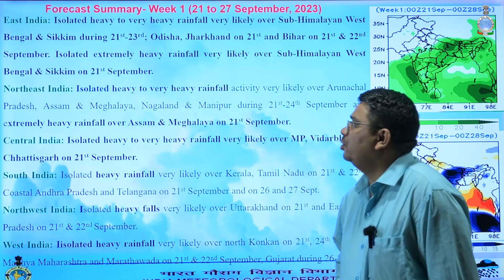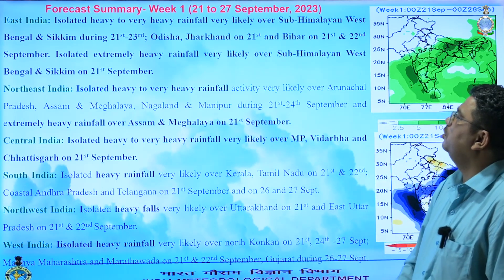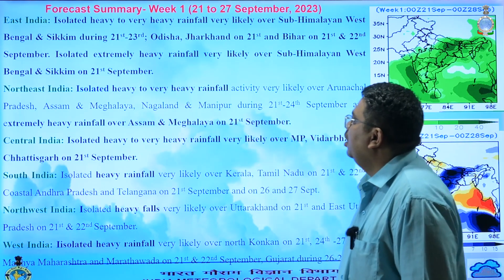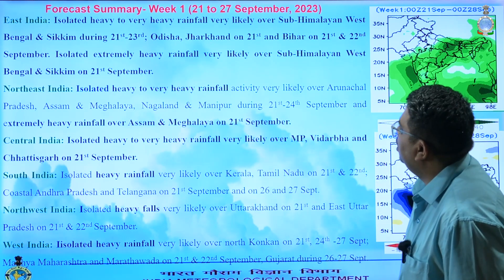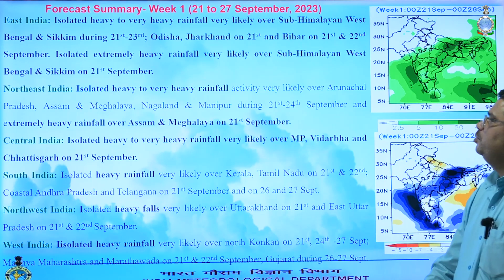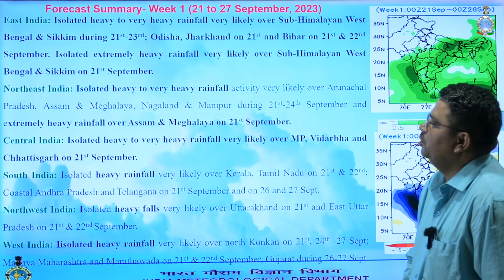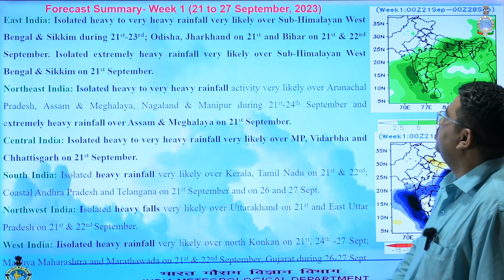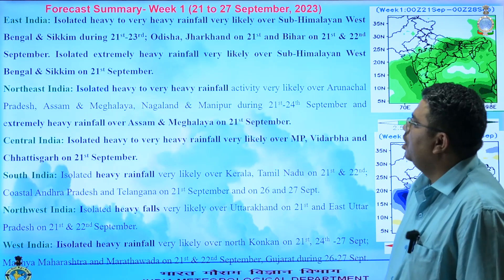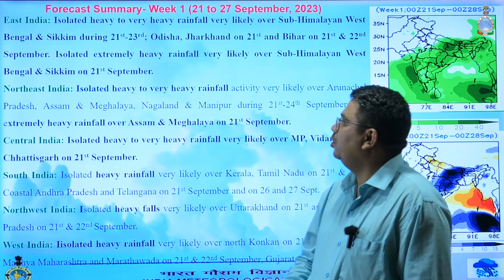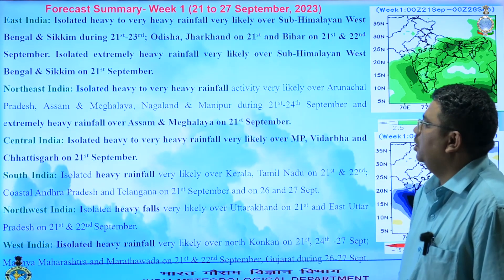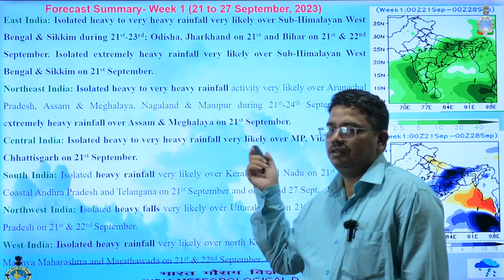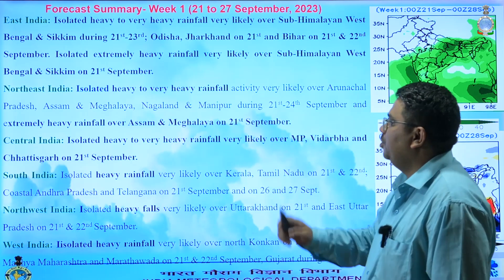This is the summary of the forecast for Week 1. Under the influence of the low pressure area in east India, heavy to very heavy rainfall activity is likely over Sub-Himalayan West Bengal and Sikkim during 21st to 23rd, over Odisha and Jharkhand on 21st, and Bihar on 21st and 22nd. Isolated extremely heavy rainfall is also likely over Sub-Himalayan West Bengal and Sikkim on 21st. This was also mentioned in today's daily weather briefing.